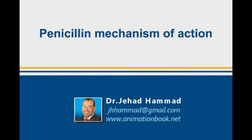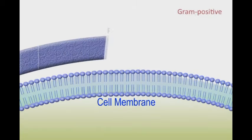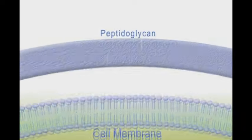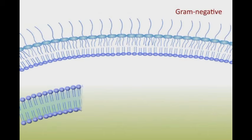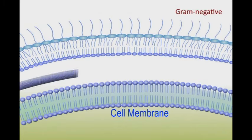Penicillin mechanism of action. The cell wall of gram-positive bacteria is composed mainly of a thick layer of peptidoglycan, whereas the more stubborn gram-negative bacteria have an extra outer layer above the peptidoglycan layer.